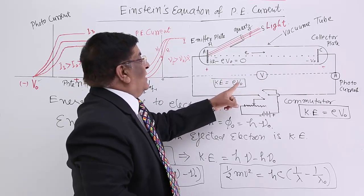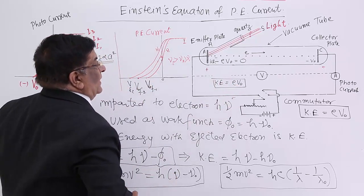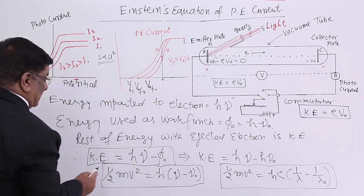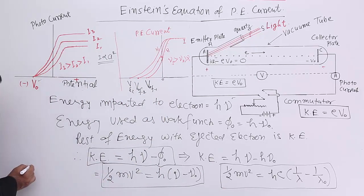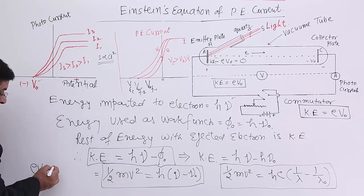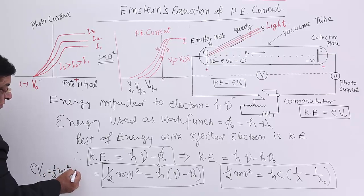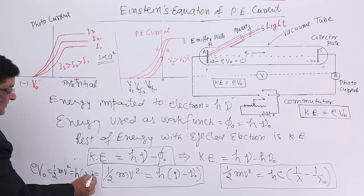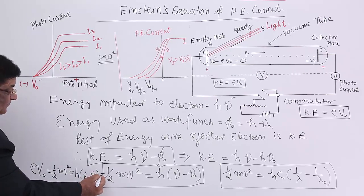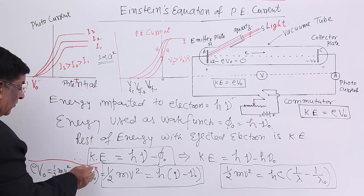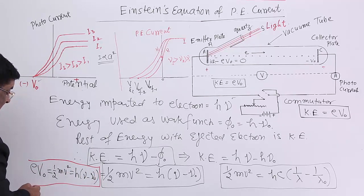E into charge into potential is the energy. So this kinetic energy we write as the expression E V0. Therefore, E V0 is equal to half mv squared, which is equal to H times (nu minus nu not). Please see this formula — this is the overall formula relating all the quantities together.